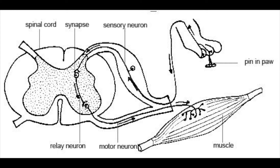We need to know the different types of neurons that are involved quickly, and these are sensory neurons, motor neurons, and relay neurons. Relay neurons connect the sensory neuron and motor neuron, and your relay neurons are in the CNS, which is the central nervous system.